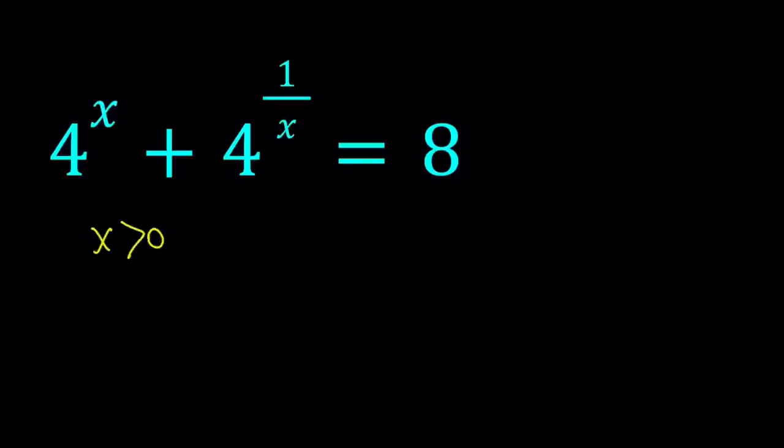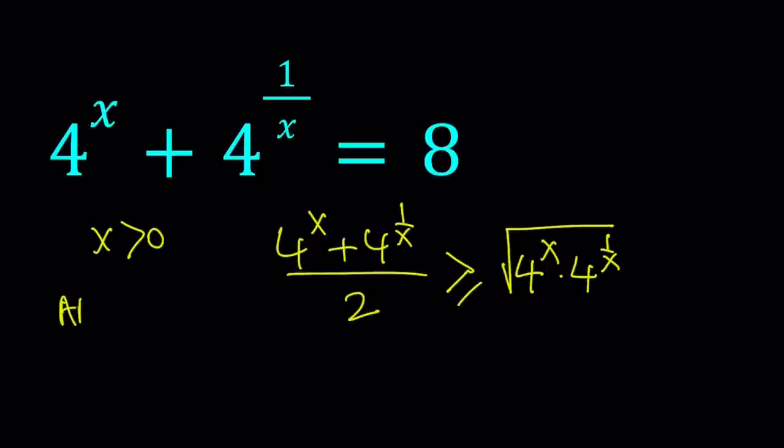Now, if you compare 4 to the power x, the arithmetic mean of these two numbers or expressions, to their geometric mean. Geometric mean, as you'll hopefully remember, is the product, the square root of the product. So this is going to be their geometric mean. And this is called AM-GM inequality.